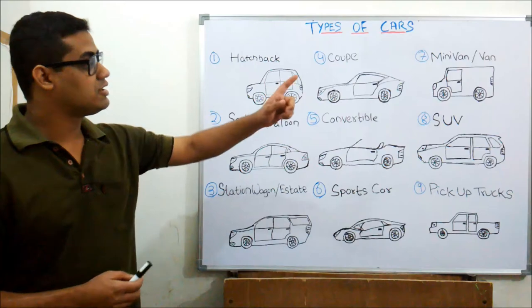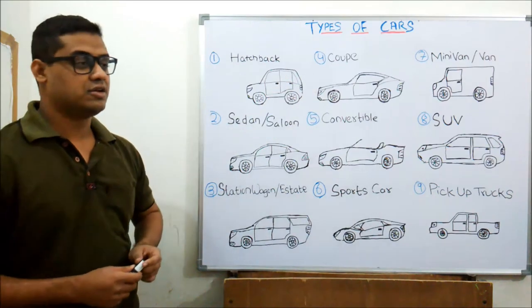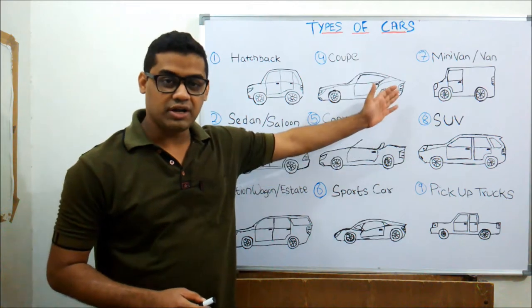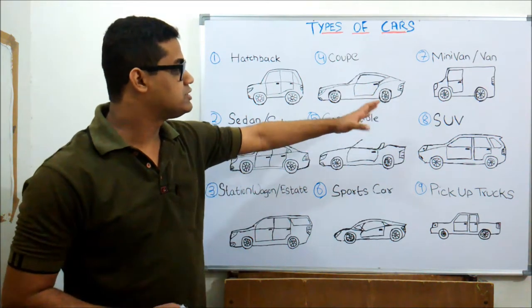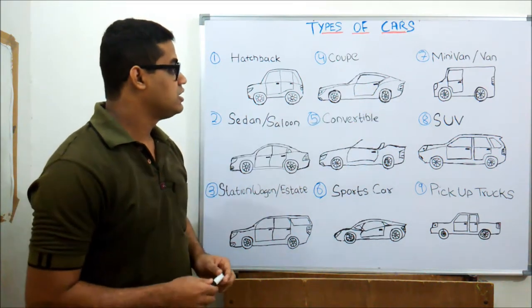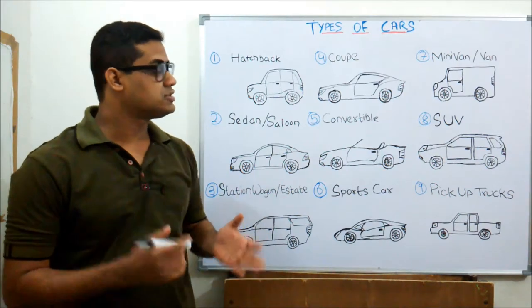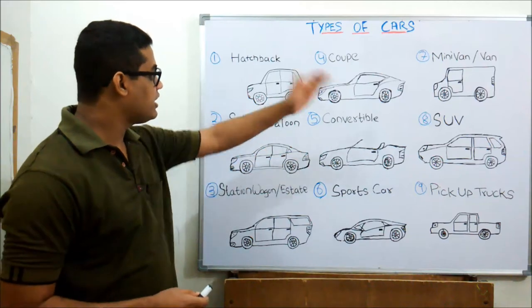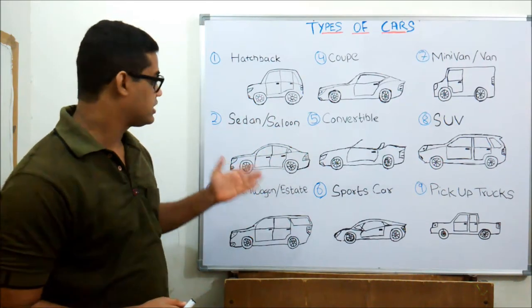The next car in the list is a minivan or a van. So minivan is a box-shaped car and it's pretty versatile. It can be configured just to carry passengers or just to carry cargo, so they're not generally like general cars like a sedan.